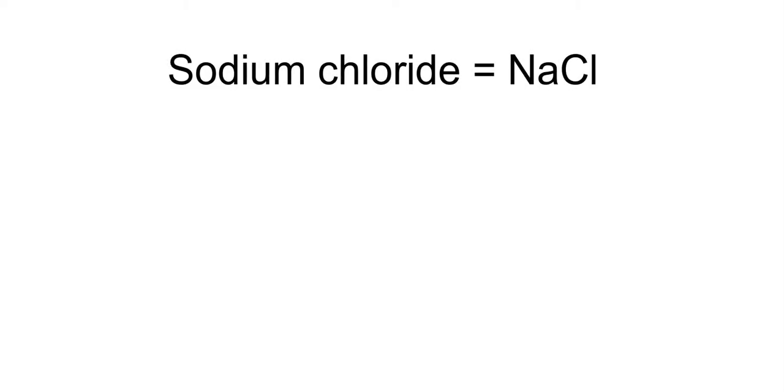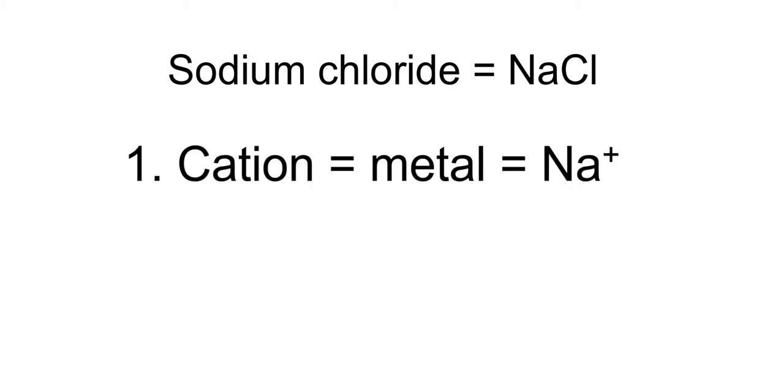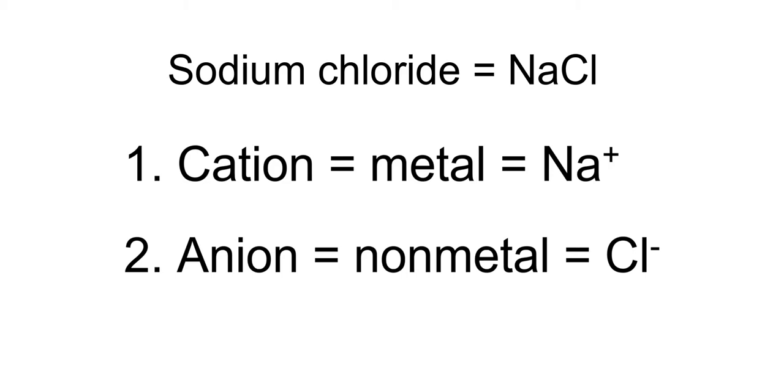First let's go over what makes a binary ionic compound using sodium chloride NaCl as our example. A binary ionic compound made up of a metal the cation Na+ which is always written first and a nonmetal the anion Cl- which will always be written second.